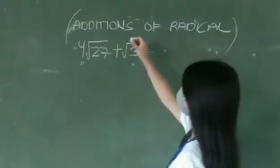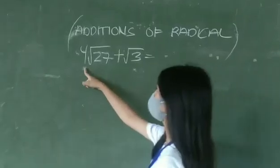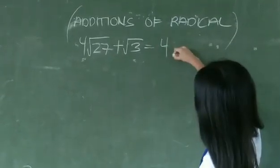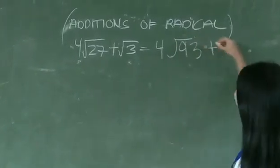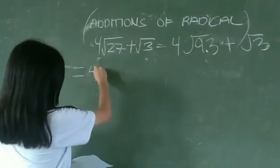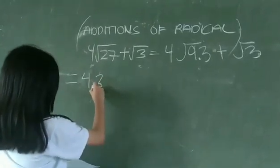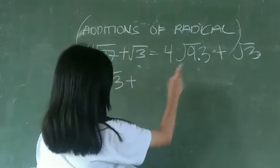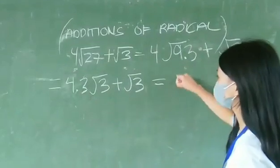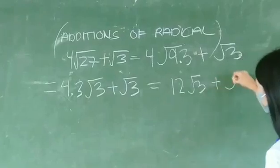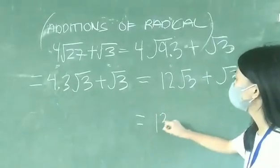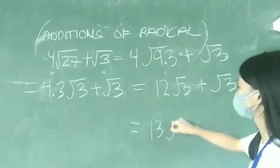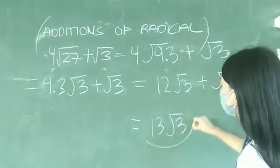How about addition of radicals? 4 times radical 27 plus radical 8. For 27, we find the factors: 9 times 3. We copy the 4 outside. The square root of 9 is 3, so we get 4 times 3 times radical 3, plus radical 8. For 8, its factors are 4 times 2, so radical 8 becomes 1 times 2 times radical 2 — but we keep radical 3. 4 times 3 equals 12. Then 12 plus 1 equals 13, since there is an invisible 1 coefficient. So the answer is 13 times radical 3.